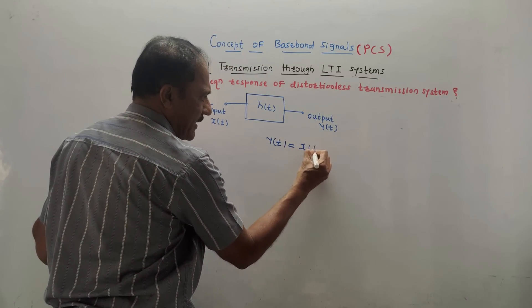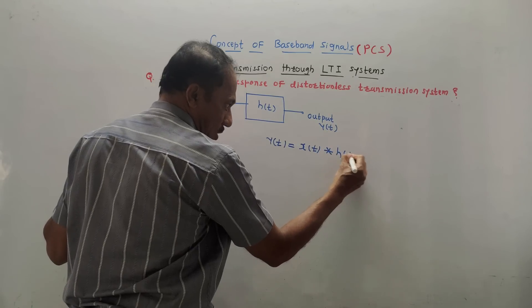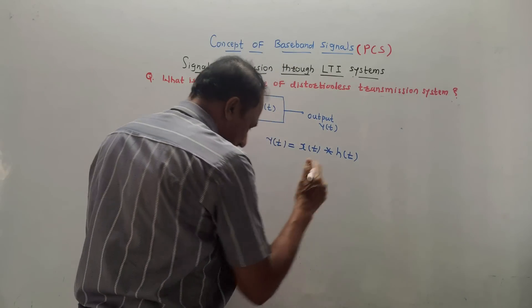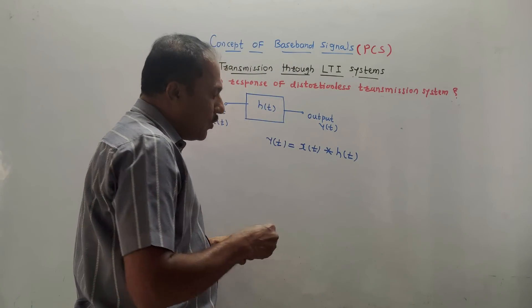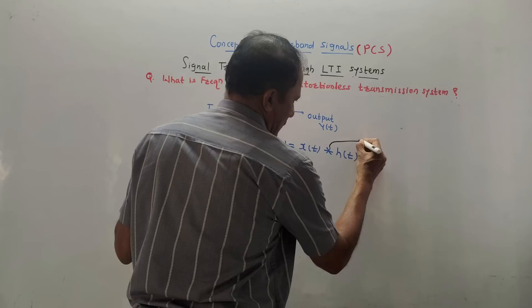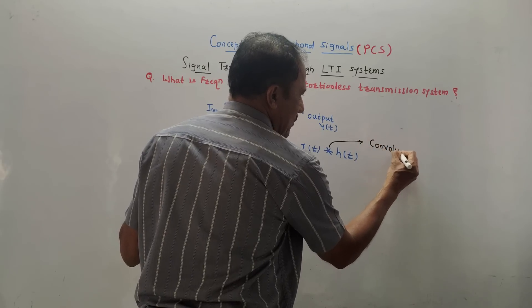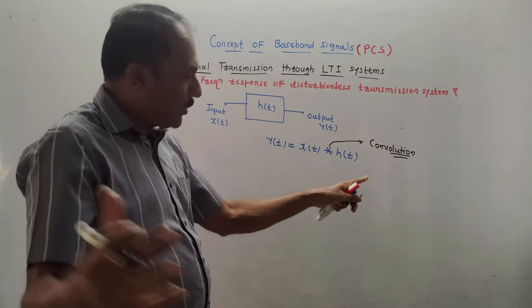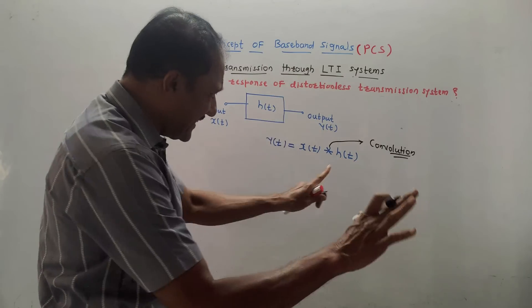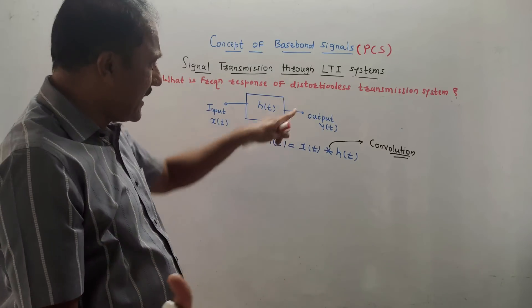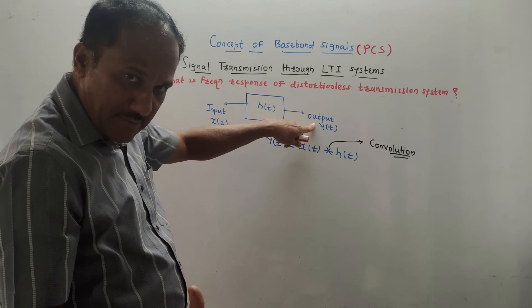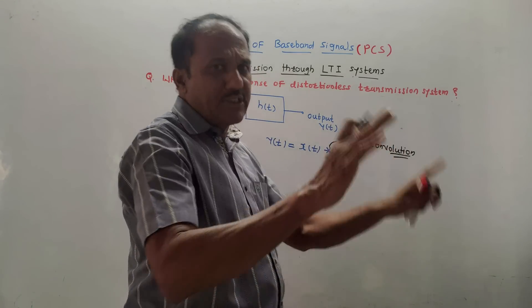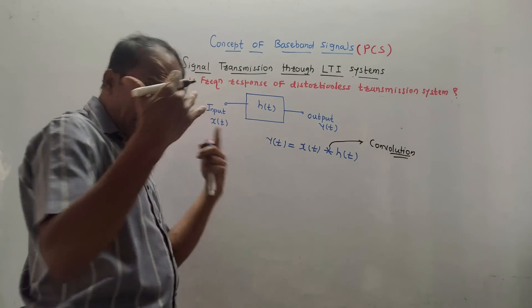The output of the LTI system is given as Y(t) = X(t) ∗ H(t), where the asterisk notation indicates convolution operation — not multiplication. Just remember: the output of any LTI system is X(t) convolved with H(t), which is a mathematical operation we will study in detail in Signals and Systems.